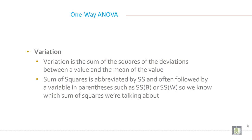After the table, check the variation. Variation is the sum of square of the deviation between a value and the mean of the value. Sum of square is abbreviated by SS and often followed by a variable in parenthesis such as SSB or SSW, so we know which sum of square we are talking about.